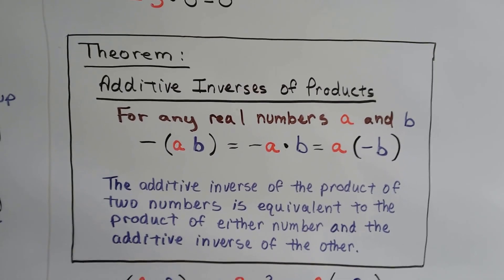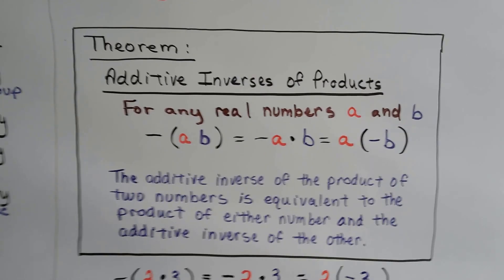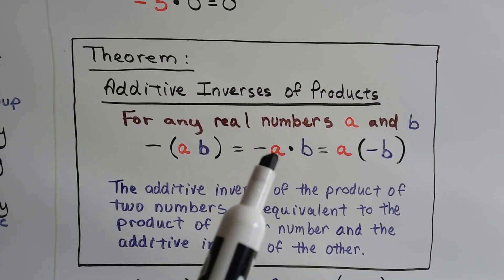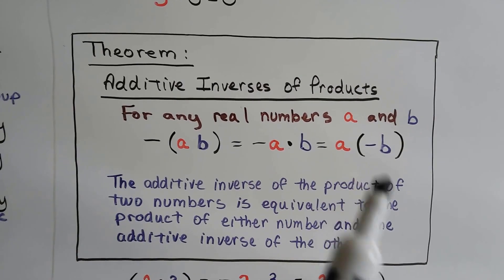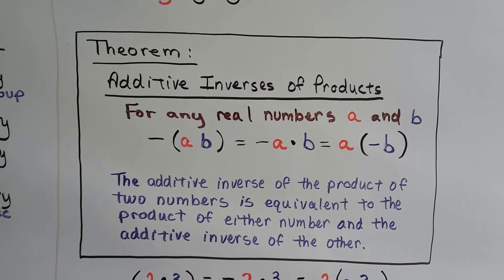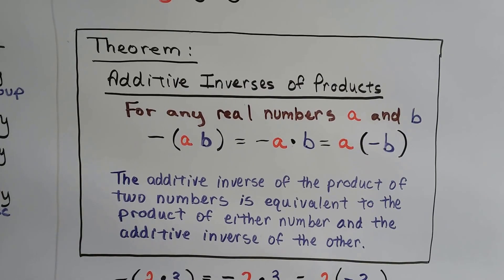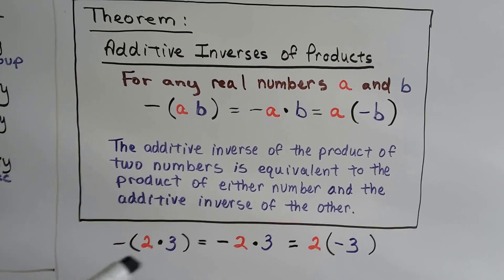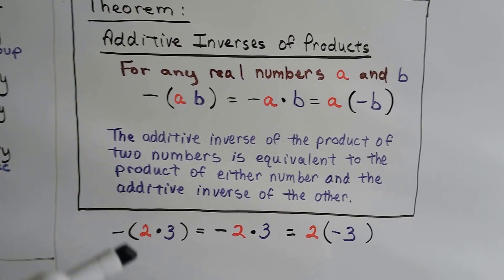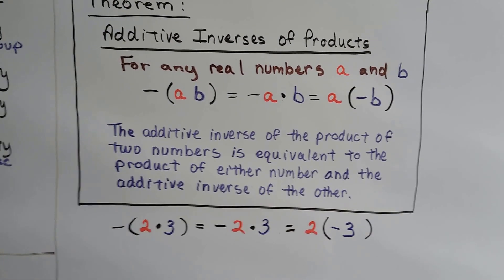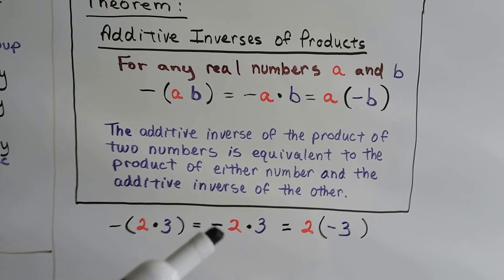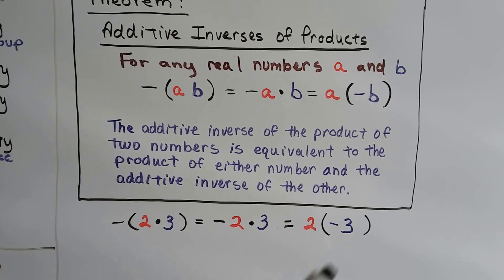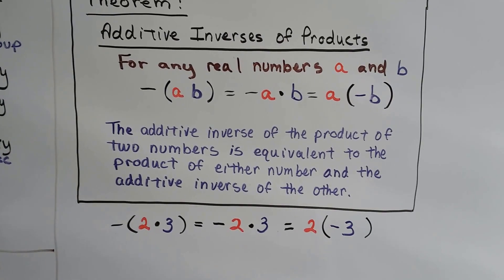The additive inverse of products says for any real numbers a and b, negative (a times b) equals negative a times b, which equals a times negative b. The additive inverse of a product of two numbers equals the product of either number and the additive inverse of the other. For example, negative (2 times 3) equals negative 2 times 3, and it also equals 2 times negative 3 — both are negative 6.